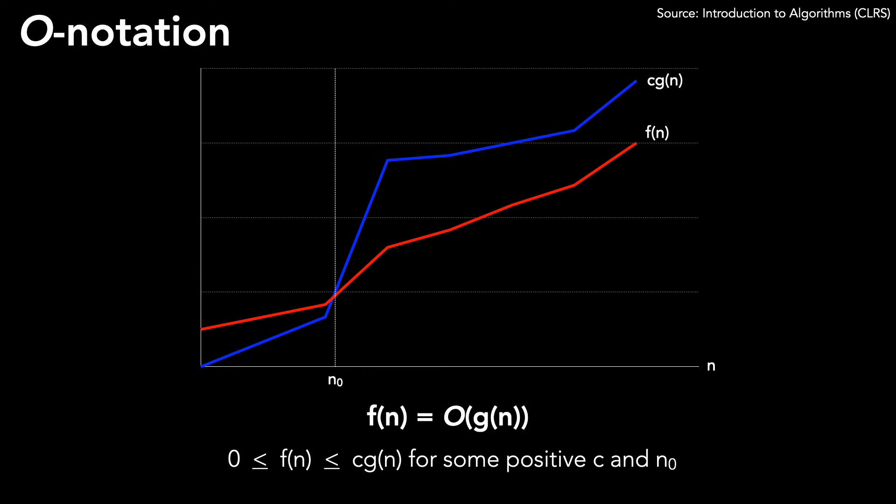After some value n0 and some choice of c, f(n) is upper bound by c·g(n).